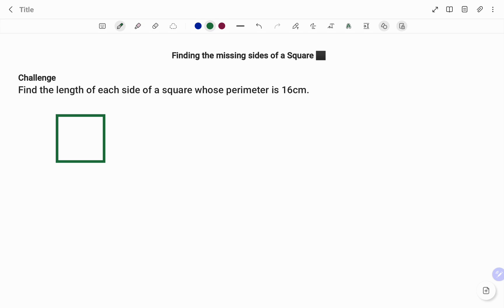This is a challenge question for you. It says, find the length of each side of a square whose perimeter is 16 centimeters. You can pause the video and give it a shot.